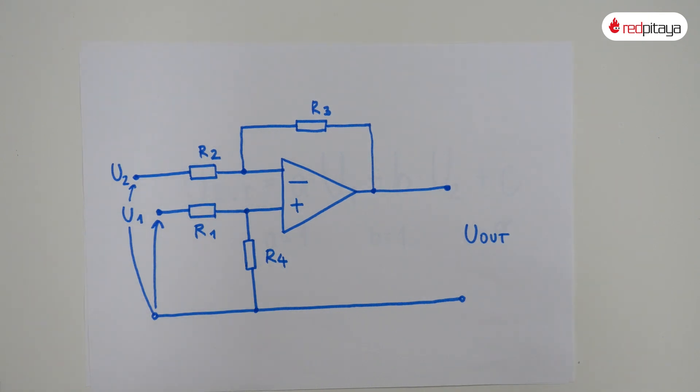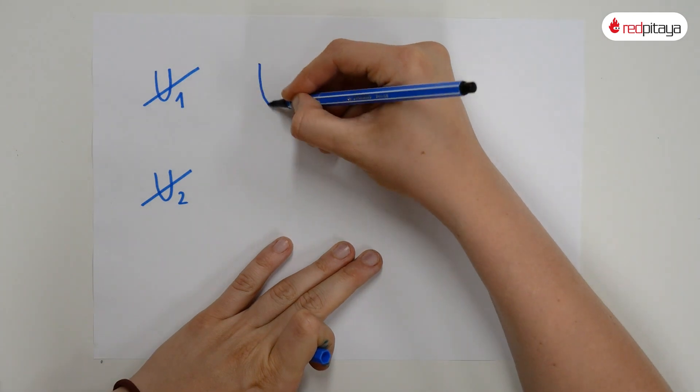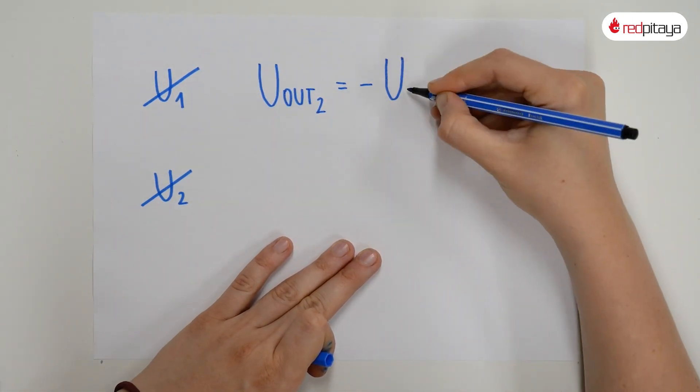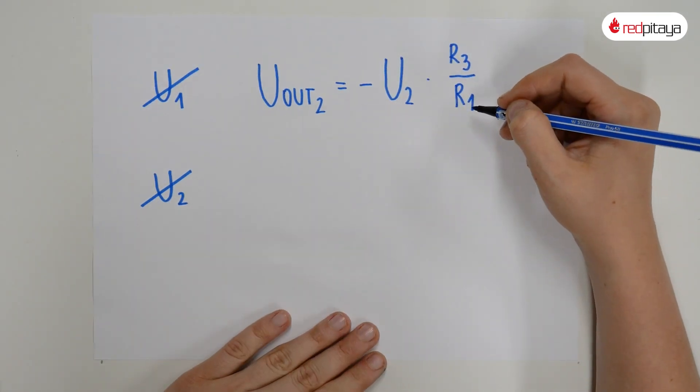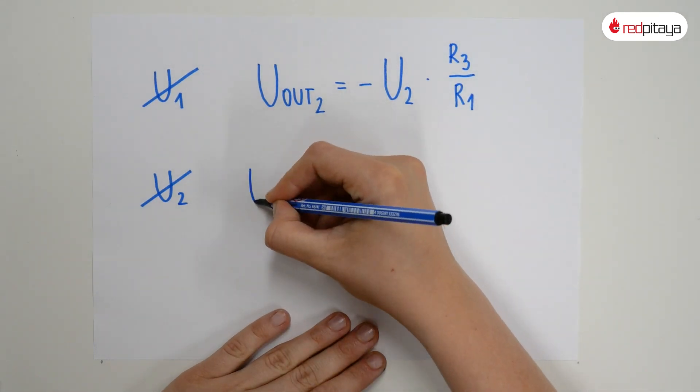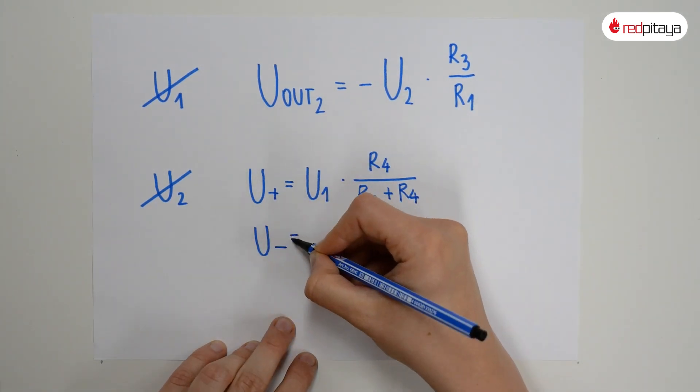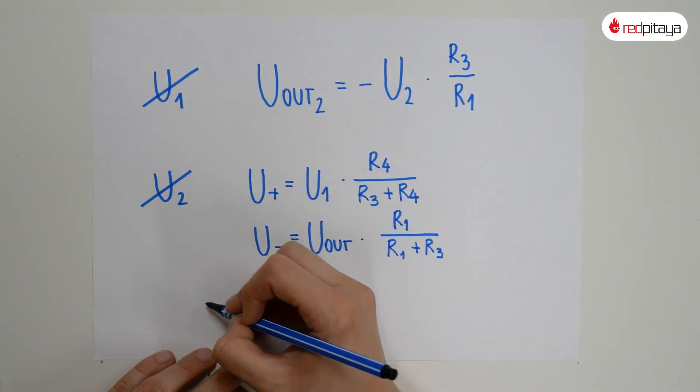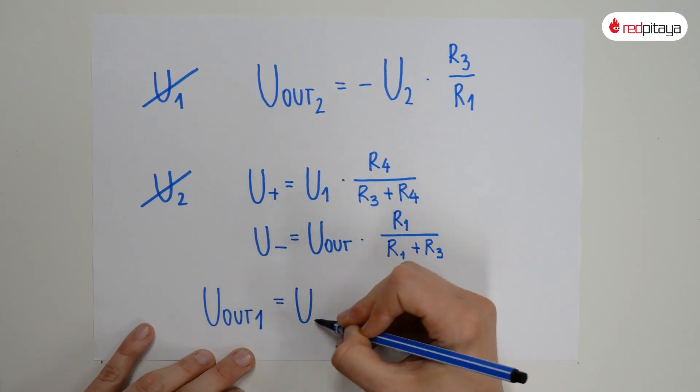Let's tackle the problem with superposition. Observing the first case, where voltage 1 is disconnected, we get what is essentially just an inverting amplifier. Looking at the case with voltage 2 disconnected, we get a bit longer calculation. When we toss the numbers around, we get...